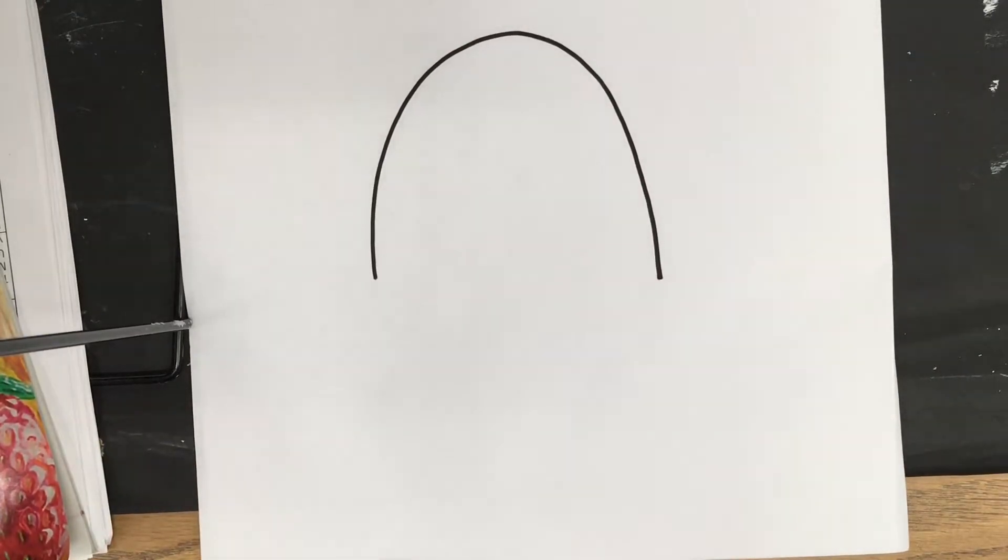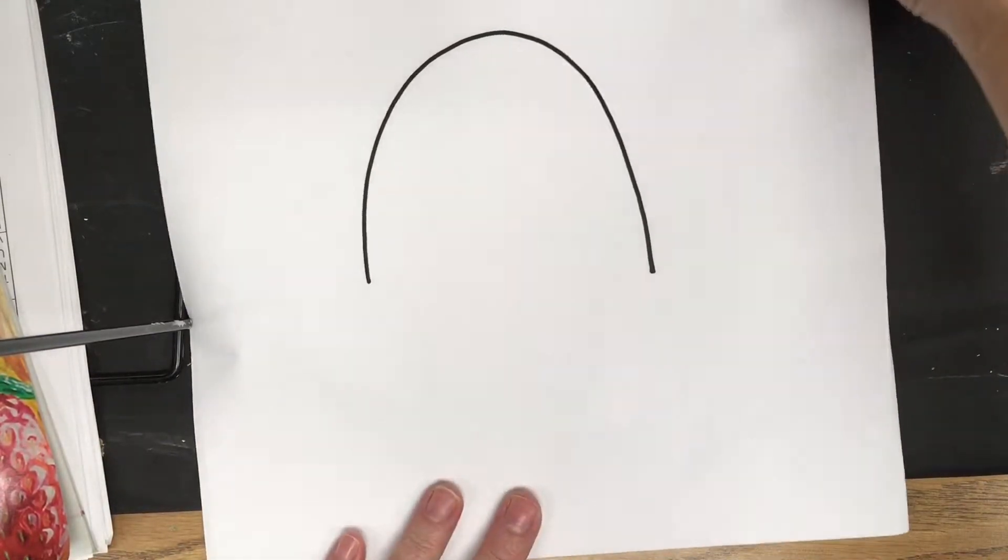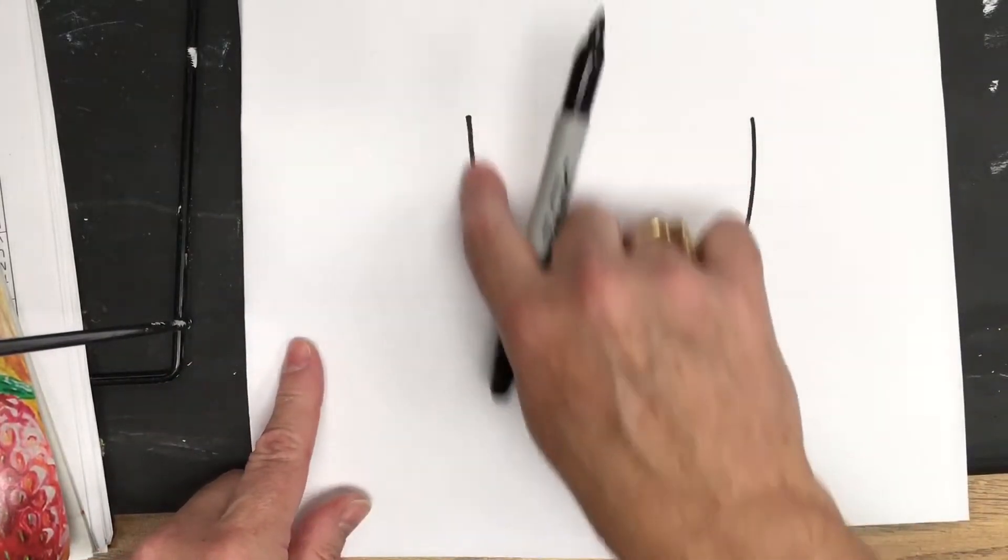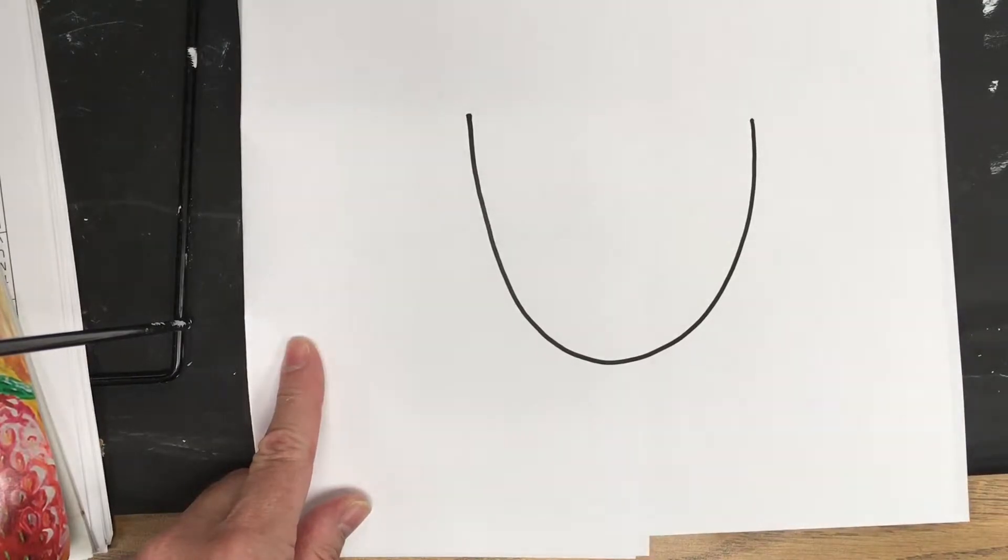Then I pull my hand off and then I'm going to turn this upside down so it looks like the letter U. It's going to be the letter U.